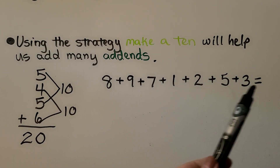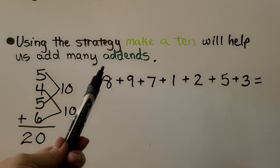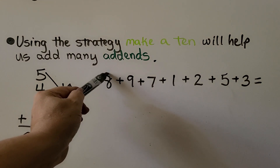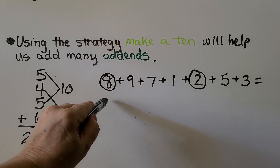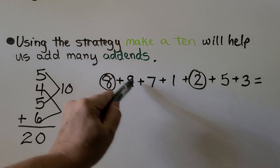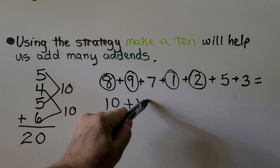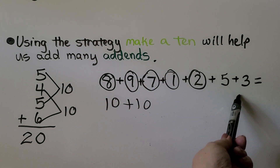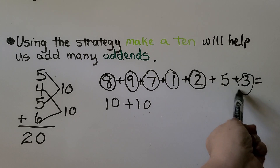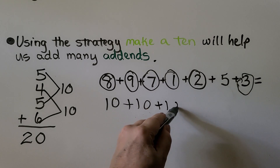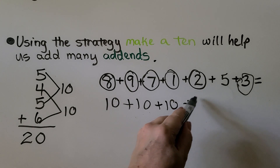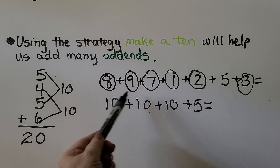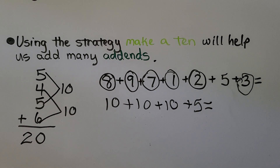Look at all these numbers that need to be added together. We can first group them to make tens: eight and two make ten, nine and one make another ten, seven and three make another ten, then another ten, and then there's a five. Now it's easy to add: ten, twenty, thirty, and five more — that's thirty-five.